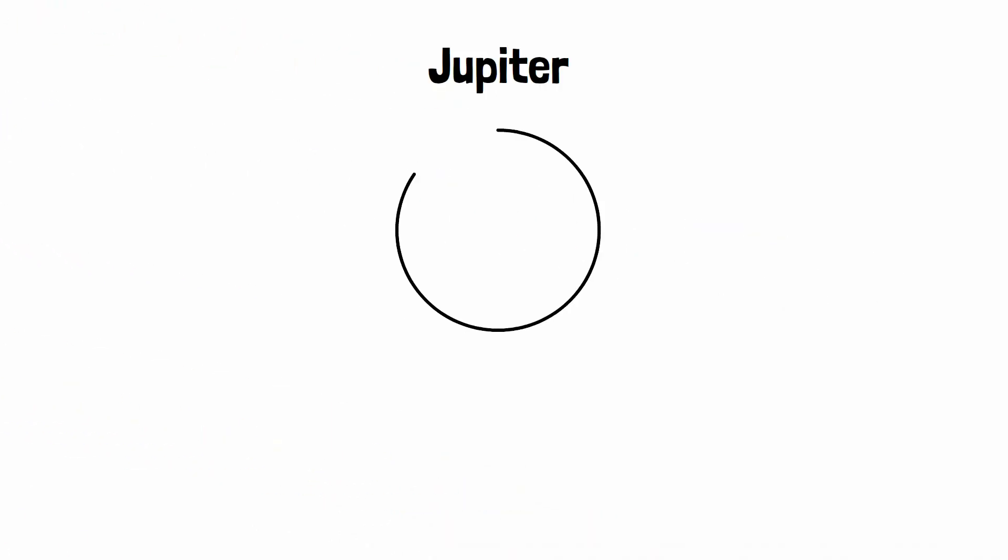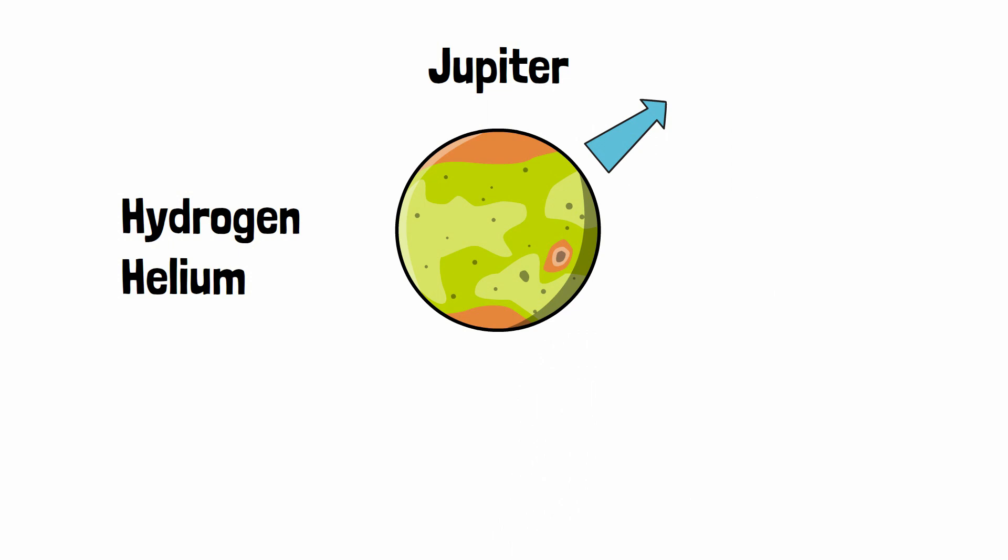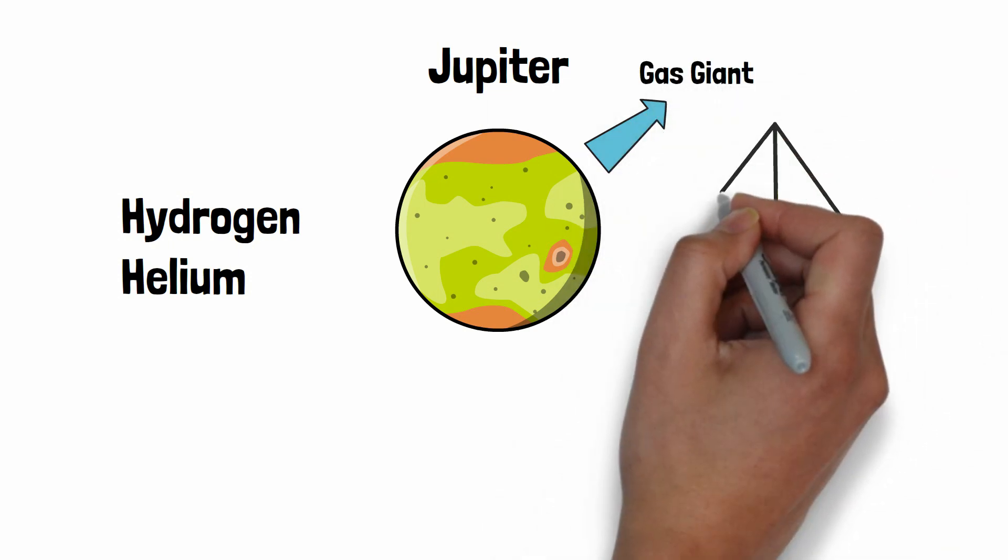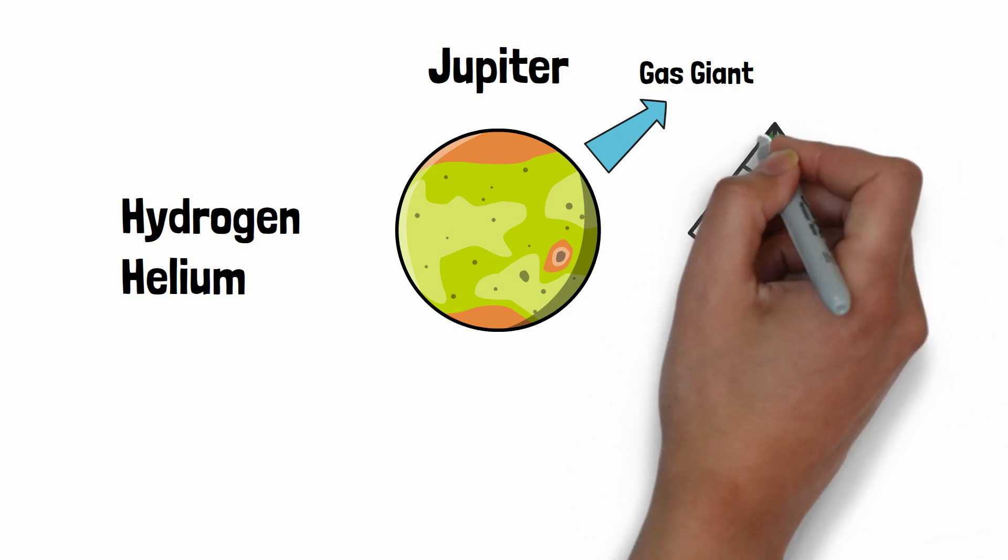Jupiter is the largest planet in the solar system. Its atmosphere is mainly made up of two of the lightest gases, hydrogen and helium. That is why, this planet is considered as a gas giant. The entire planet is surrounded by a large band of clouds of different colors.